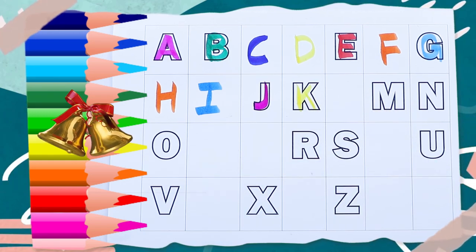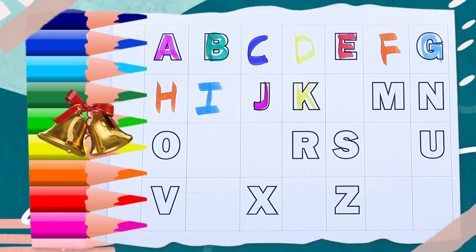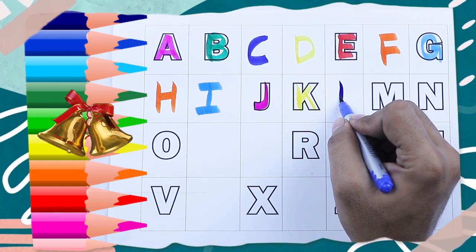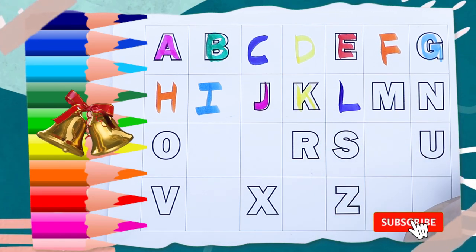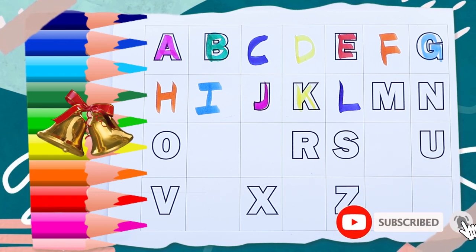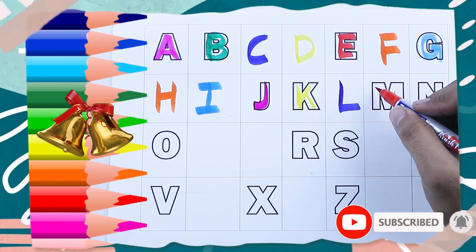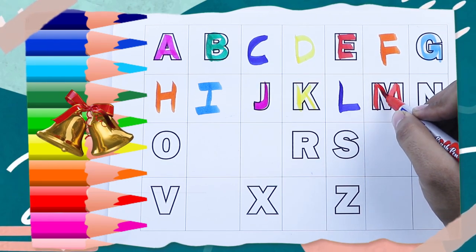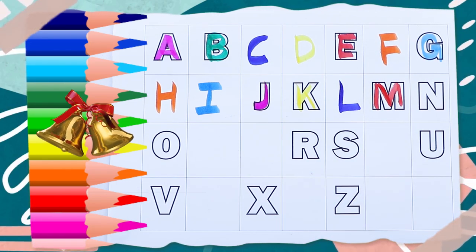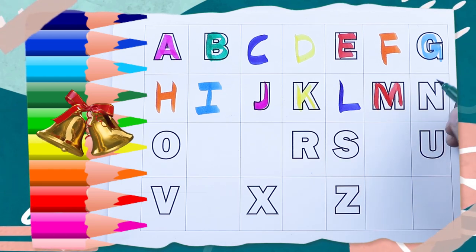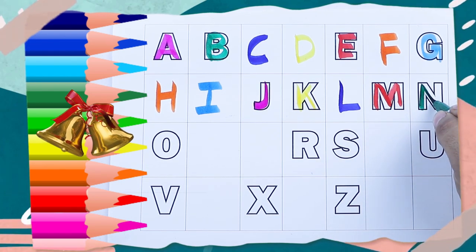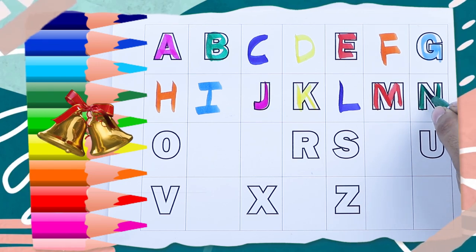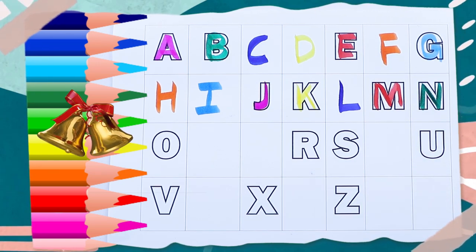What next? Tell me. L, right. Blue color, L. What is the next, N? Capital M, capital M, M for monkey. What next? N, green color, capital N, N for nest.